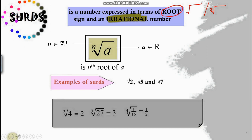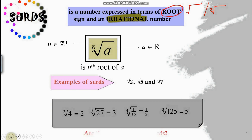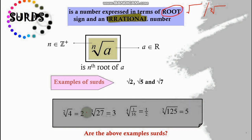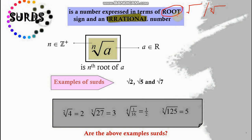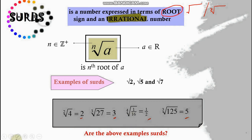Cube root of 27 is actually 3, fourth root of 1/16 is actually 1/2, and cube root of 125 is actually 5. So are these examples of surds or not? Remember, we define a surd as having the root sign but it must also be irrational. These numbers are rational, so you cannot say that these are surds.